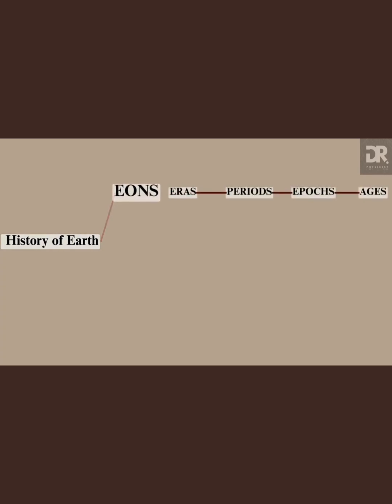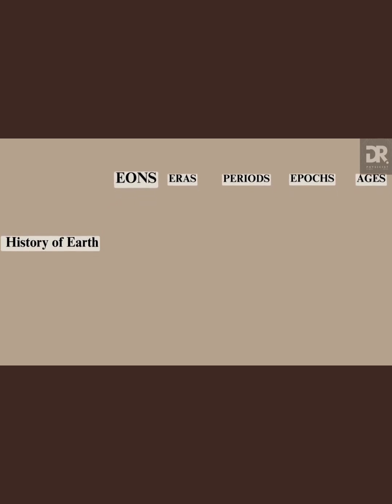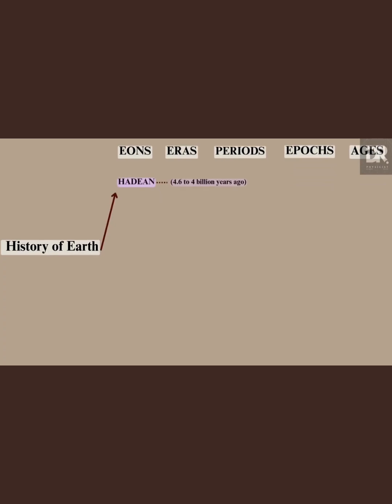Eons are the largest time units, spanning hundreds of millions to billions of years. Earth's history can be divided into four eons: Hadean, Archean, Proterozoic, and Phanerozoic.